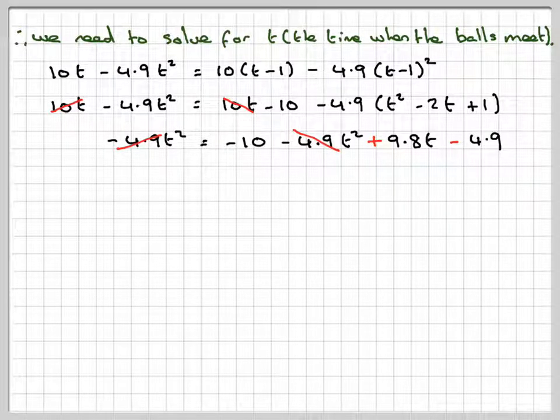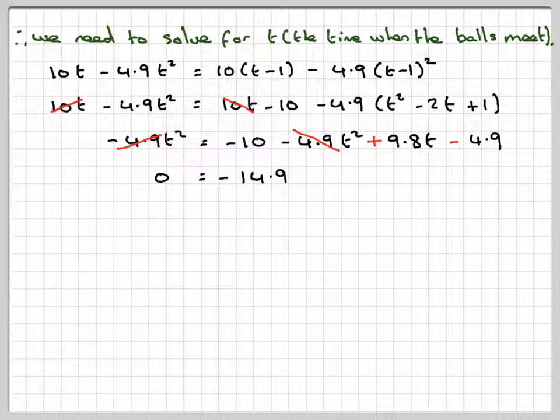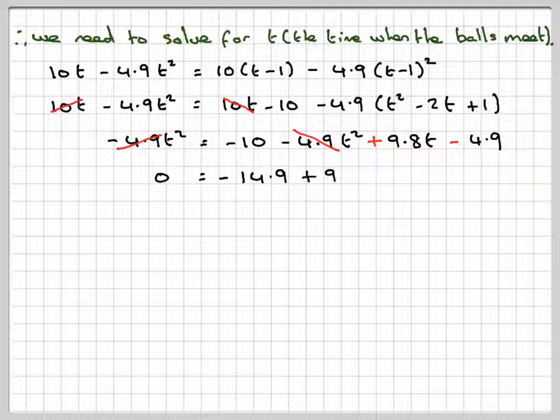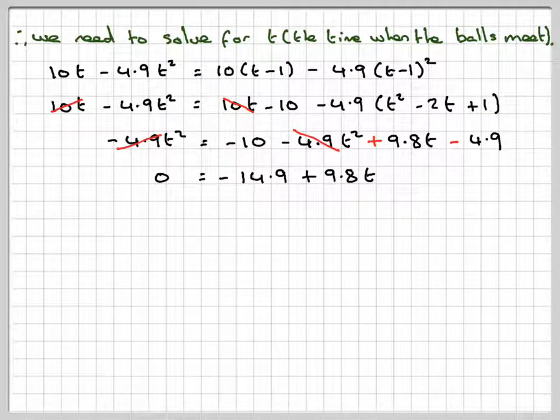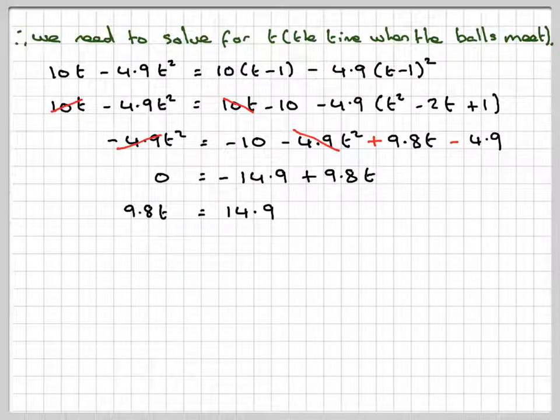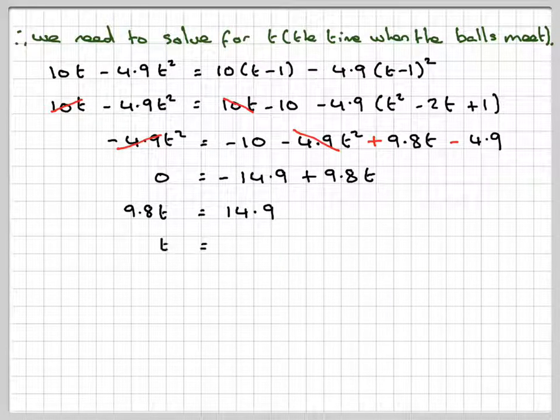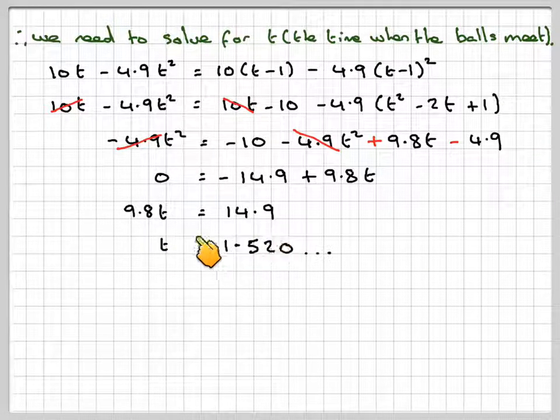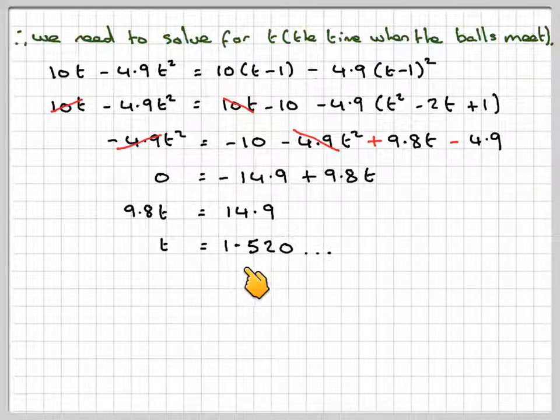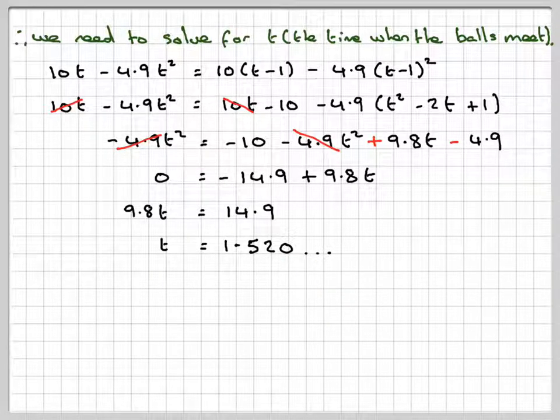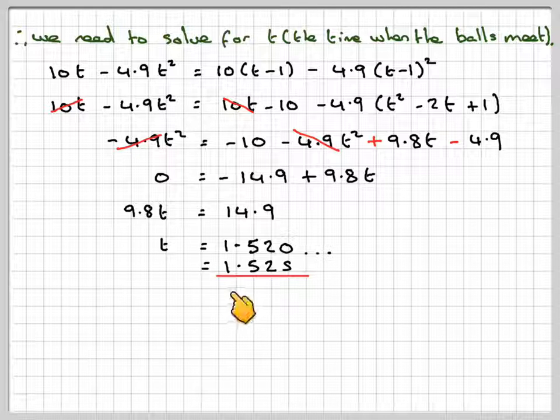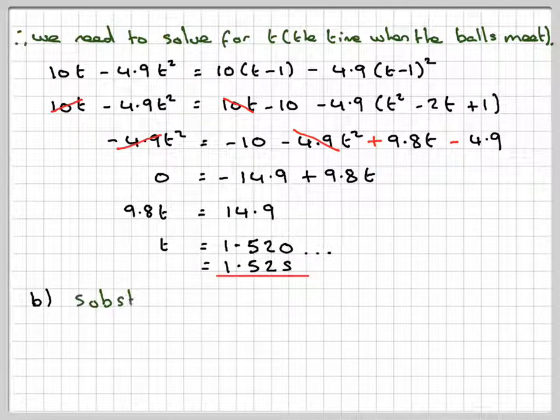Minus 10 minus 4.9 is going to give me minus 14.9 plus 9.8T. Therefore, 9.8T is going to be 14.9, and therefore T will be 14.9 divided by 9.8, which gives me 1.52, and then to three significant figures, that gives me 1.52 seconds.